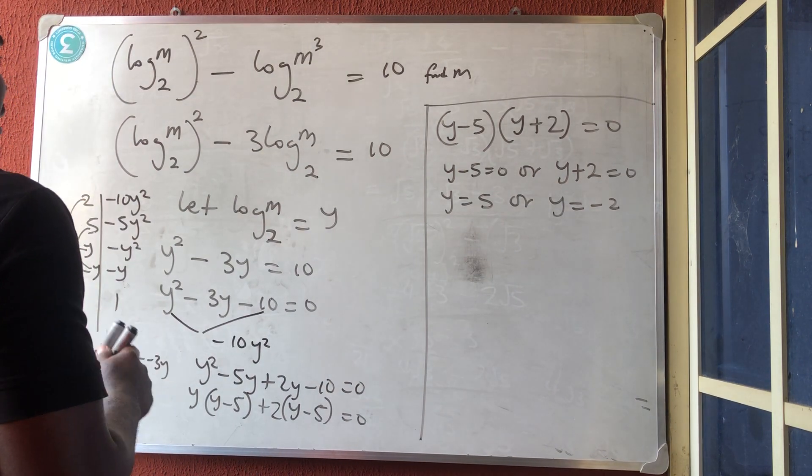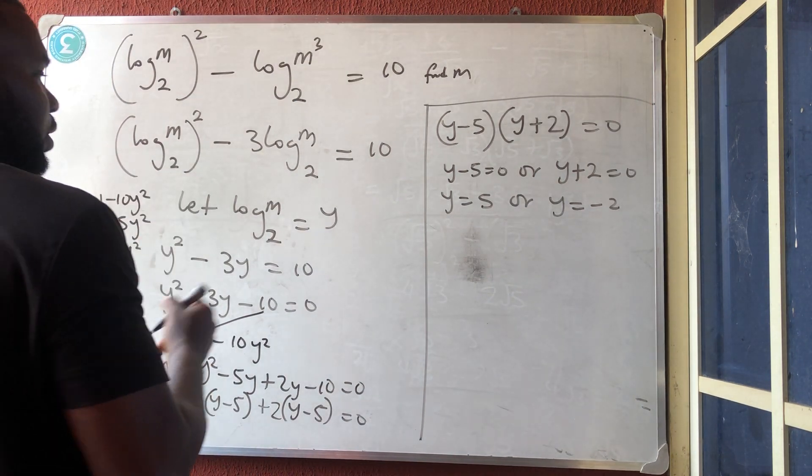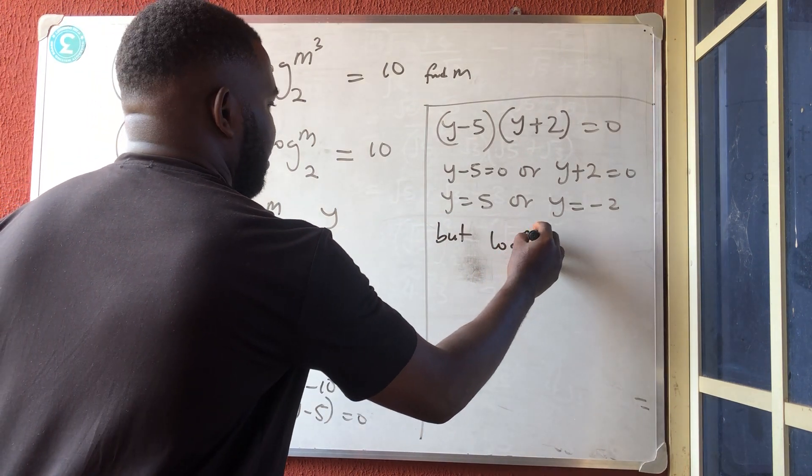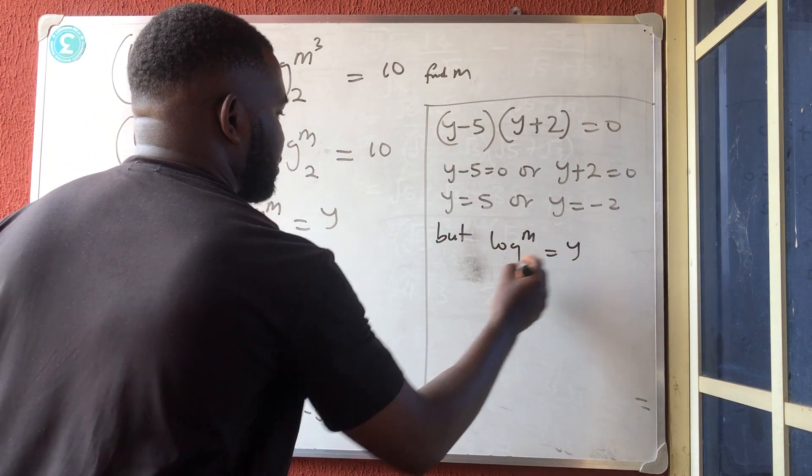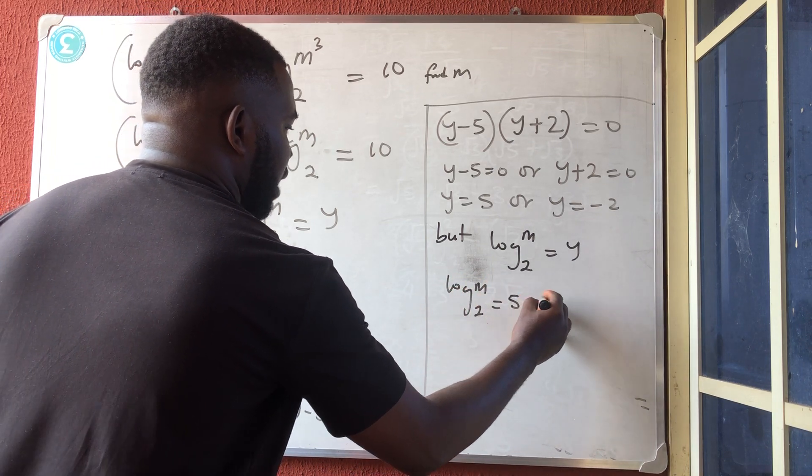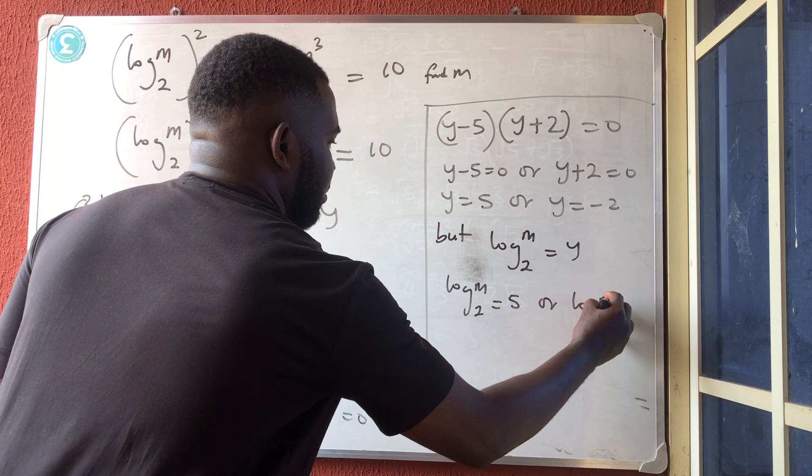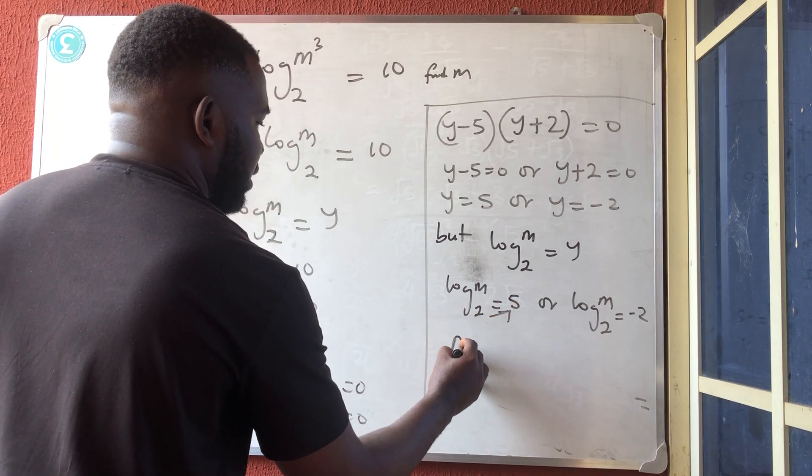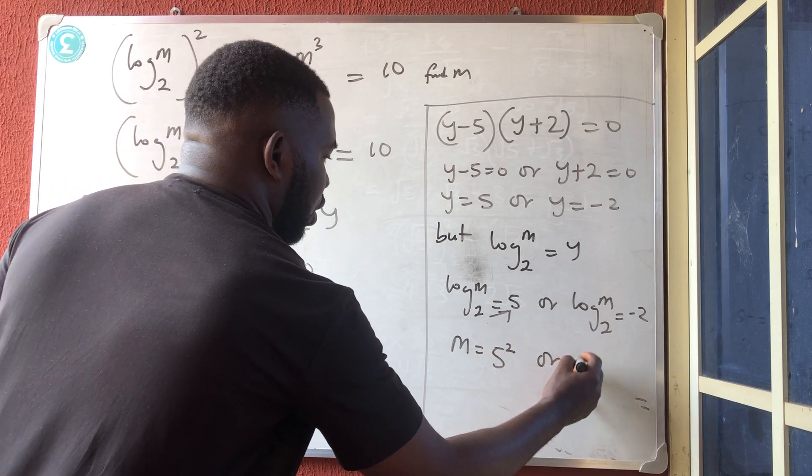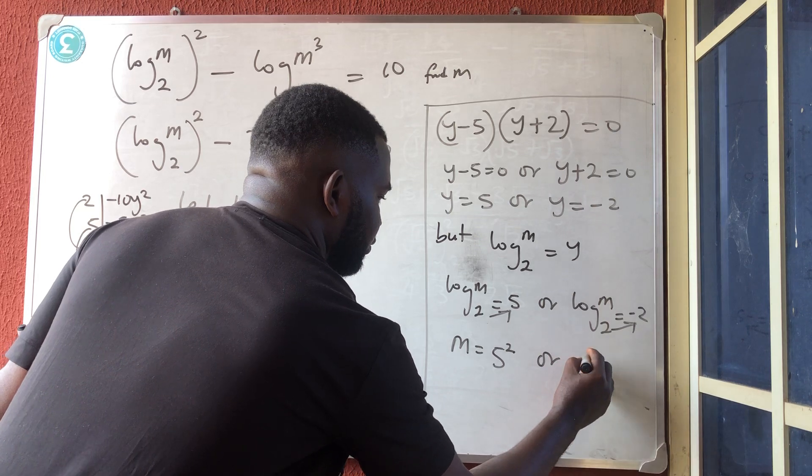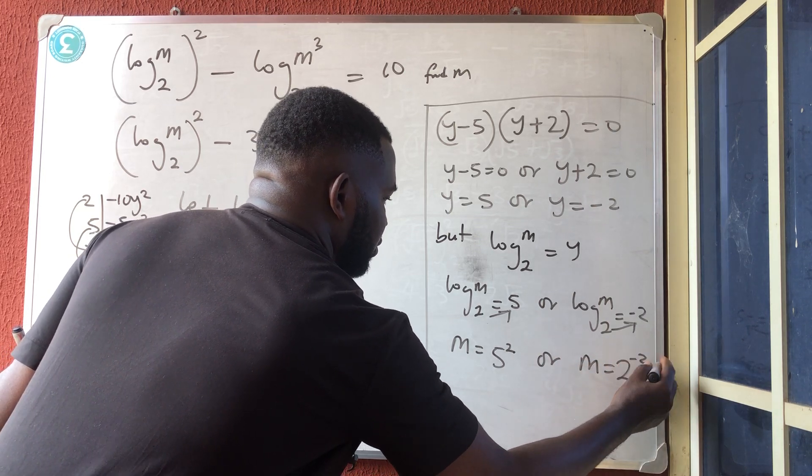But I'm not looking for y. I'm looking for m. I will tell them, but there's a place I said let's log m base 2 be equal to y. So therefore, log m base 2 is equal to 5 or log m base 2 is equal to minus 2. So this can carry this to have that m is equal to 5 raised to power 2, or this can carry this to have that m is equal to 2 raised to power minus 2.